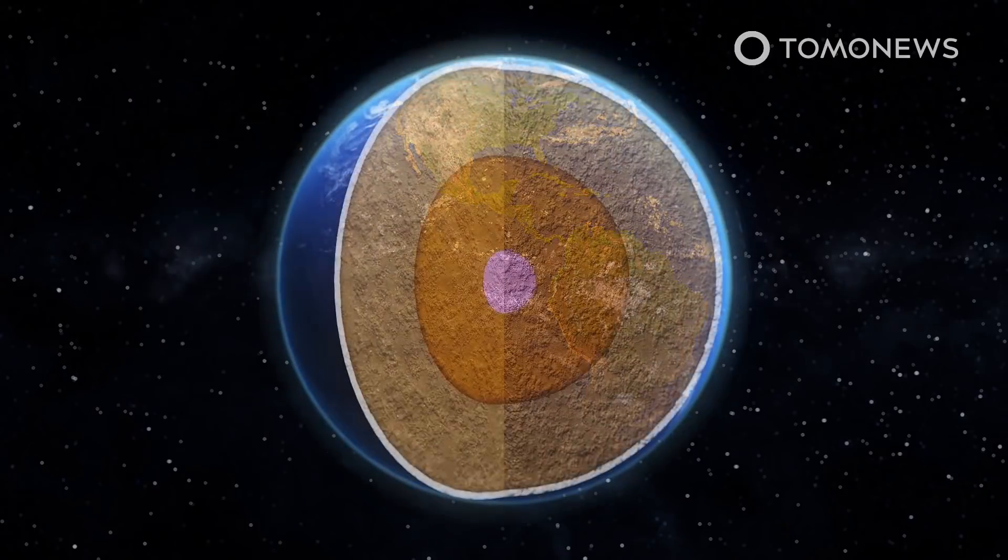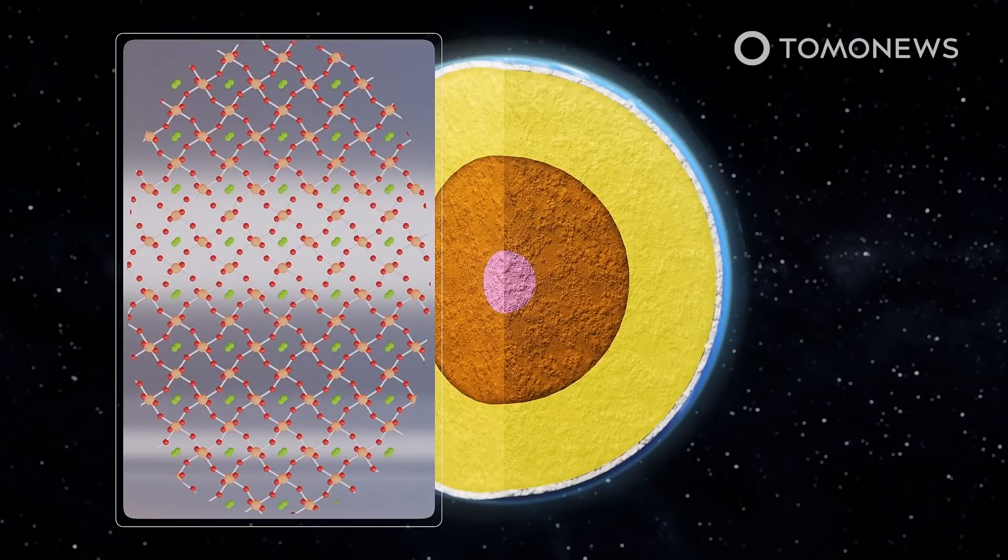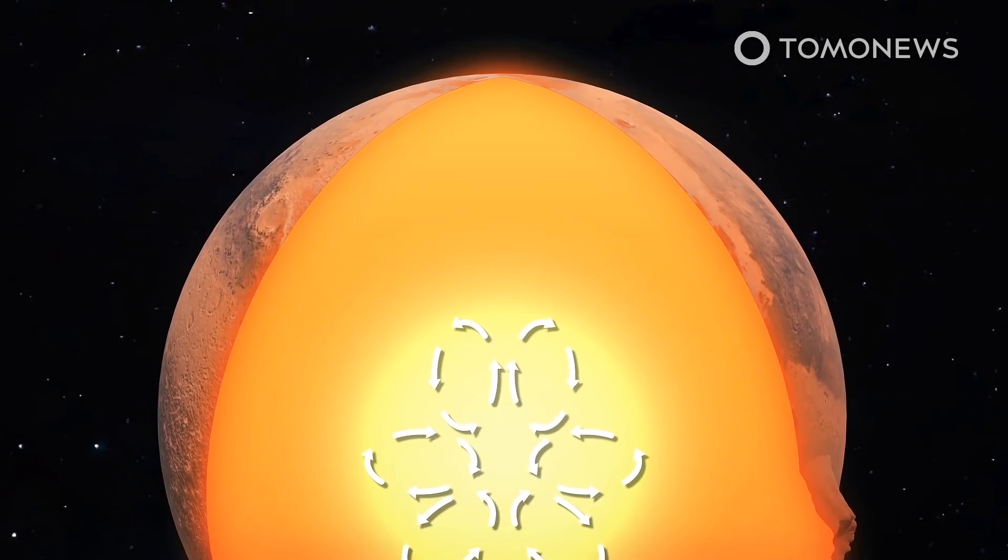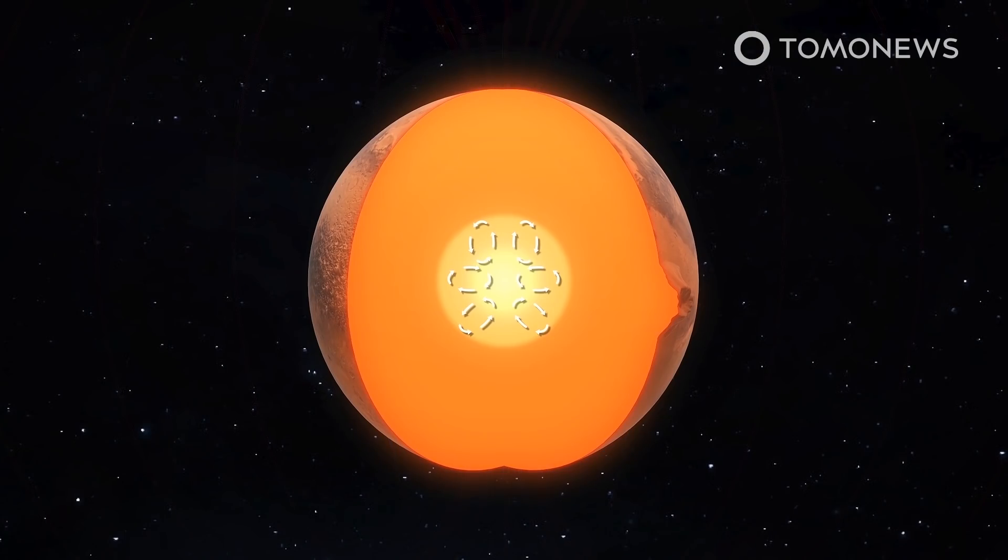On Earth, this stiff mineral blankets the core, slowing convection and the loss of heat. On early Mars, its absence would have led to rapid cooling. This initially would have permitted strong convection in the metal core, which drove a global magnetic field. But because of rapid cooling, this is now switched off and today, Mars has no global magnetic field.